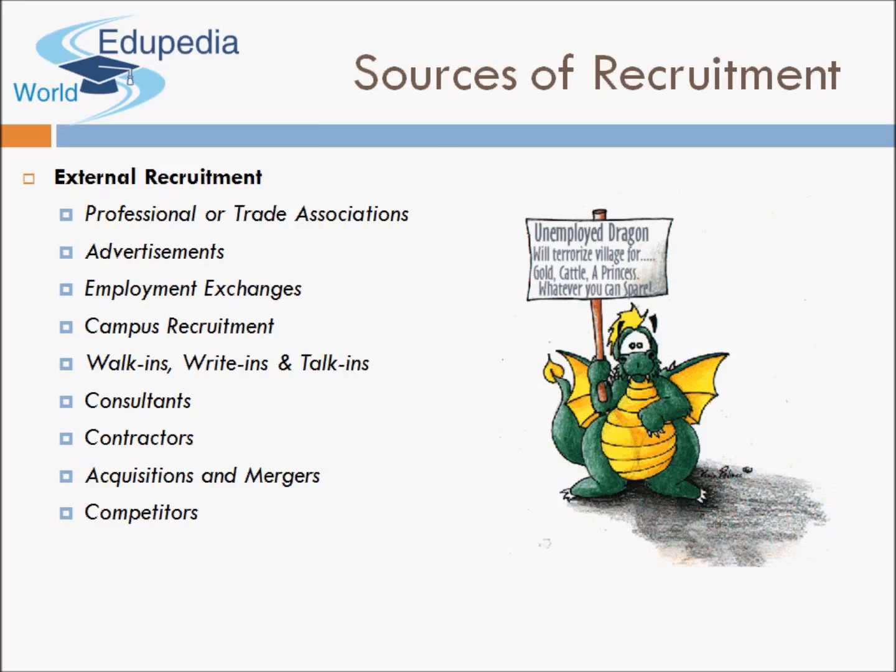Consultants and contractors are mediators who help employers meet potential employees. A consultant does major recruitment work — not only recruiting but also helping to screen and select the right candidate. Contractors just bring people to the organization and do not participate in the selection process. Acquisition and merger: when a merger happens, the number of employees increases because the newly joined company already has employees. Competitors: you can pick up people from competitor organizations — again an external recruitment source.